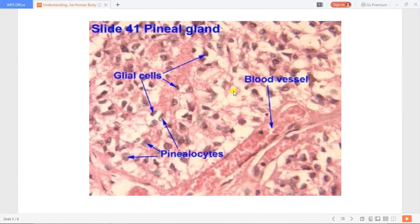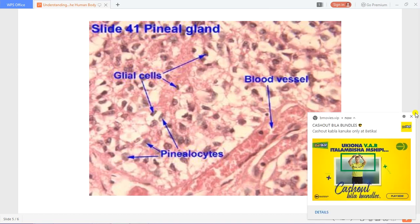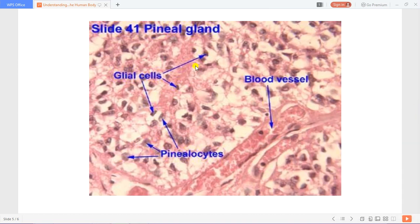So you can appreciate that the pinealocytes are the ones that form the melatonin. Then they are supported by the glial cells. And also it is richly vascularized. Note that the pineal gland has no nervous tissue.